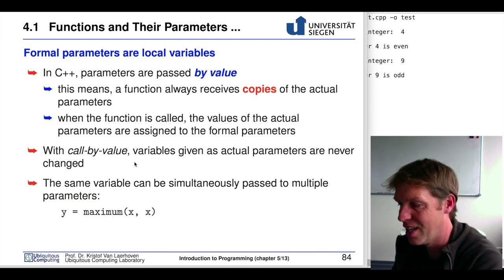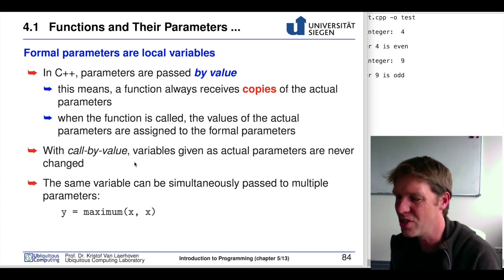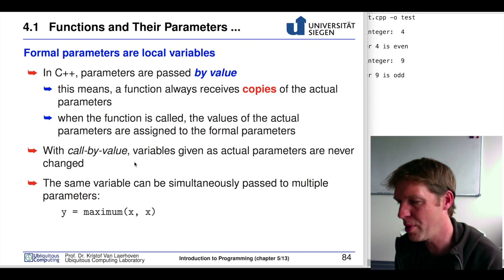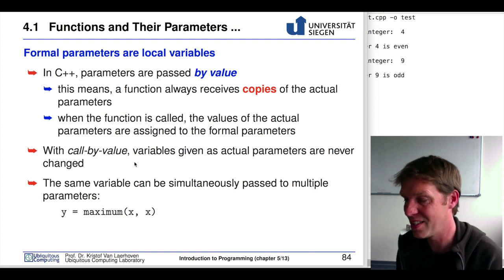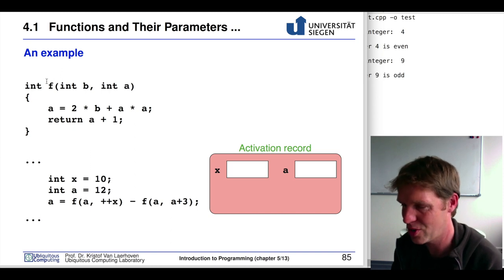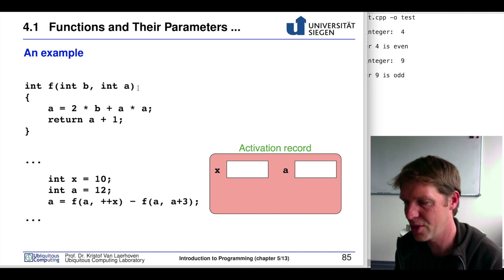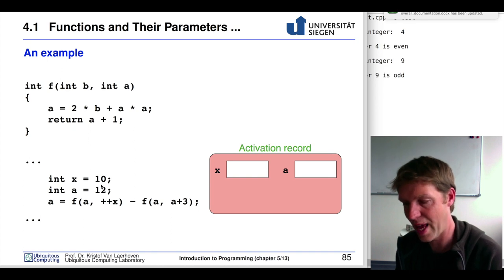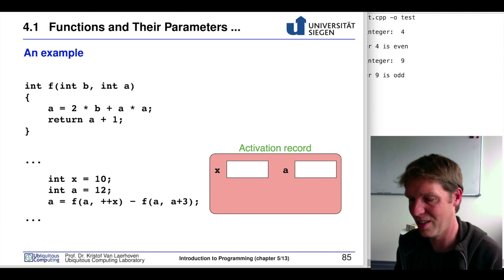Passing a parameter by value means you're not using the exact variable inside your function — you copy its value and only use that copy, not the variable itself. That means a function always receives copies of parameters. Let's see an example: we have function f with two parameters b and a, where a is assigned to a combination of b and a, and that is returned. In main, we have two variables x and a that are assigned values and used as parameters in our function.